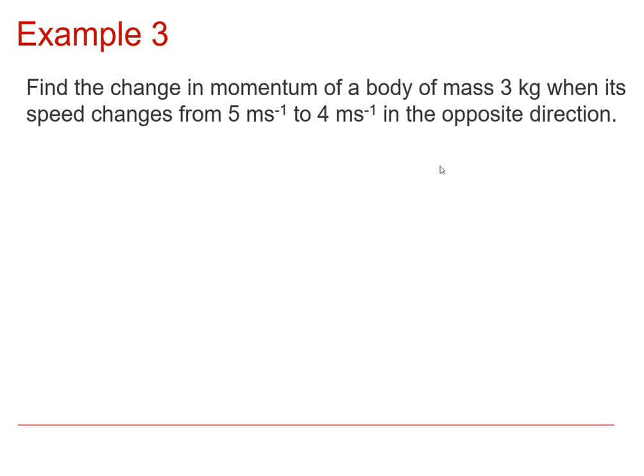Now in this example, we've got a body of mass of 3 kilograms, and it has changed from going at 5 metres per second in one direction. So let's say it looks like that initially, its velocity, to 4 metres per second in the opposite direction.